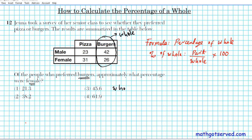The whole component of the formula is the total number of people that prefer burgers. So the number of people that prefer burgers is a combined value, so it's going to be 42 for male plus 26 for female giving us a total of 68. So that's our whole.